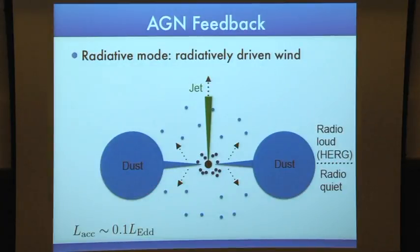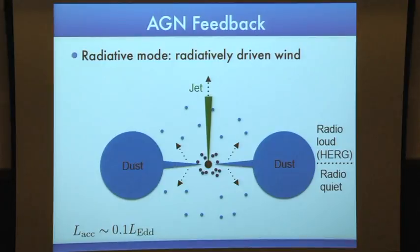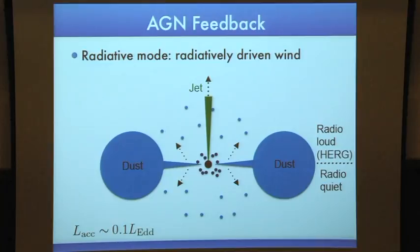I'm showing the schematic of the radiative mode AGN feedback — the winds created by a geometrically thin, optically thick accretion disk. As discussed, the separation between radio-loud AGN and radio-quiet AGN is useful. The radio-loud AGN in the radiative mode are the high-excitation radio galaxies. Some of these also have powerful radio emission, and from the orientation angle, they can be type one quasars with broad lines or type two with strong narrow lines.